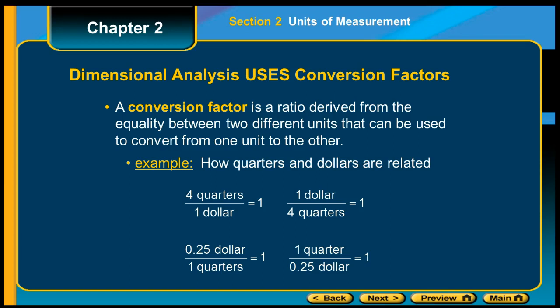Four quarters over a dollar or one dollar over four quarters are the same thing. Or you could write 0.25 dollar is one quarter, or one quarter is 0.25 dollars. They are all the same conversion factor. Why would you need different ones? Well, it depends on which units would have to go where.